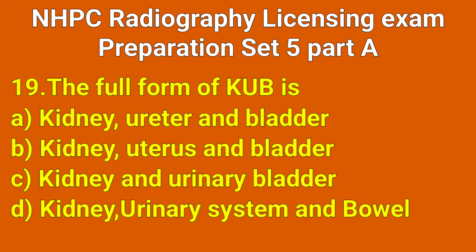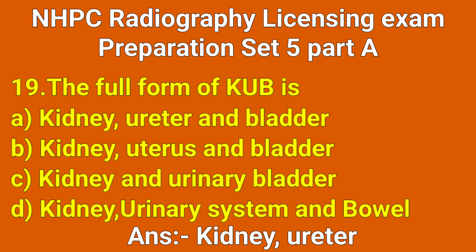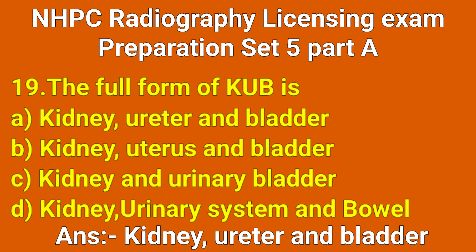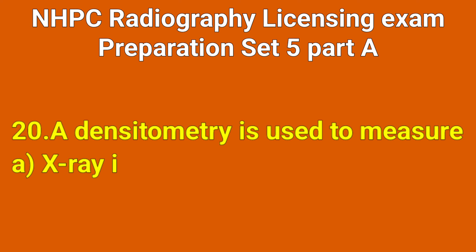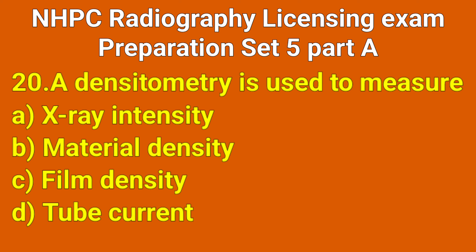Question number 19: The full form of KUB is which option? Correct answer: option A, Kidney, Ureter and Bladder.